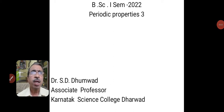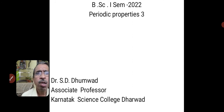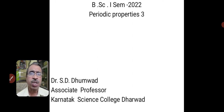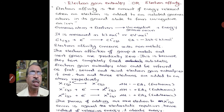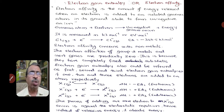Dear students, today let us study about two other periodic properties. We have studied in the last class about the periodic properties of atomic and ionic radii and ionization enthalpy. In today's class, let us study electron gain enthalpy or electron affinity and electronegativity.